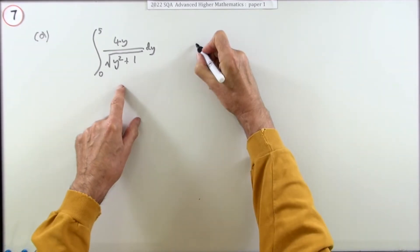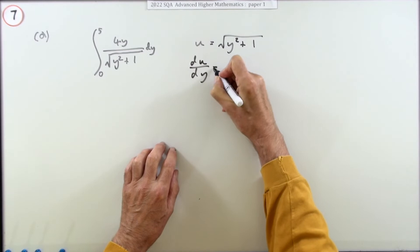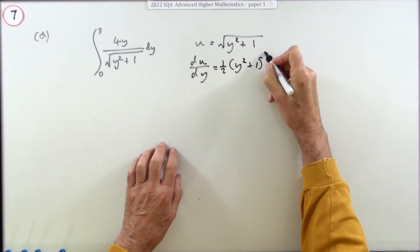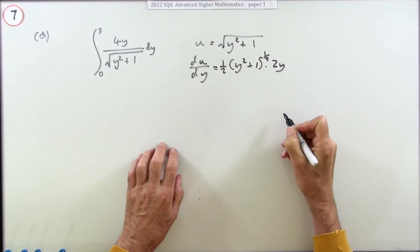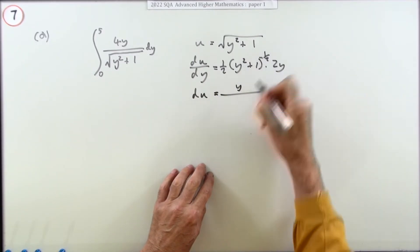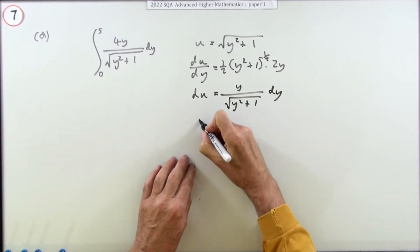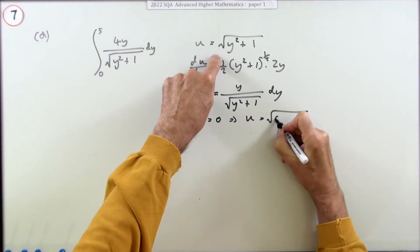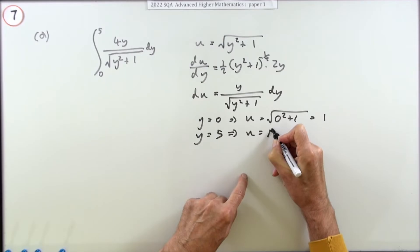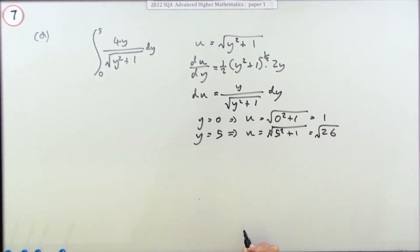For the 'otherwise' method, let u equal the whole denominator: √(y² + 1). Then du/dy uses the chain rule — it's a function of a function, power of a half, so: (1/2)(y² + 1)^(−1/2) multiplied by the derivative of the inner part, 2y. Rewriting neatly, du equals y over √(y² + 1) dy. The limits: when y = 0, u = 1; when y = 5, u = √26.